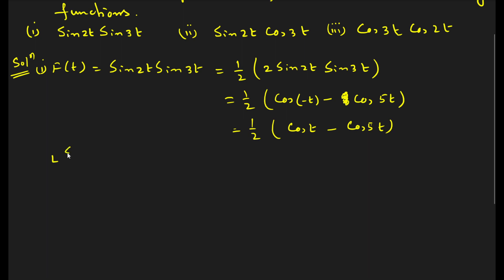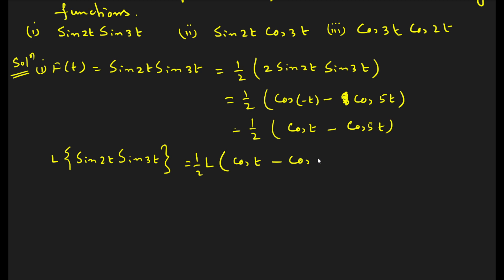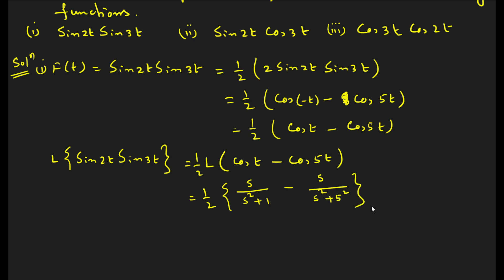The Laplace transformation of sin(2t)·sin(3t) equals half times the Laplace transformation of [cos(t) − cos(5t)]. The Laplace transform of cos(t) is s/(s²+1), and cos(5t) gives s/(s²+25). So the answer is (1/2)·[s/(s²+1) − s/(s²+25)]. Once you simplify a little bit, we can easily find the Laplace transformation.